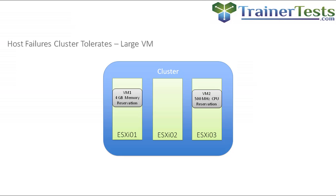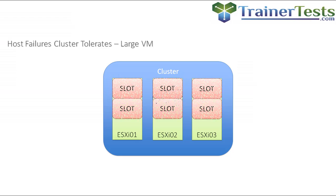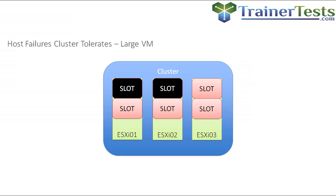Let's say that we have a large virtual machine — VM1 now has a 4 gig memory reservation. That's going to contribute to a larger slot size, and that's going to skew the number of slots that are available per host. Now I can only power on two virtual machines per host, and we need to set aside one host's worth of resources for failover. So now my cluster has the same hardware, but because my slot size is larger, I can run fewer virtual machines.